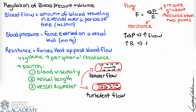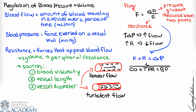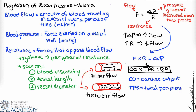Rearranging that equation by multiplying both sides by R gives us F × R = ΔP, which we can rewrite as CO × TPR = BP, where CO is cardiac output, TPR is total peripheral resistance, and BP is blood pressure. An increase in cardiac output with constant TPR raises blood pressure, and an increase in TPR with constant cardiac output also raises blood pressure. Total peripheral resistance is equivalent to afterload; increased afterload means the heart must pump harder to maintain the same cardiac output.